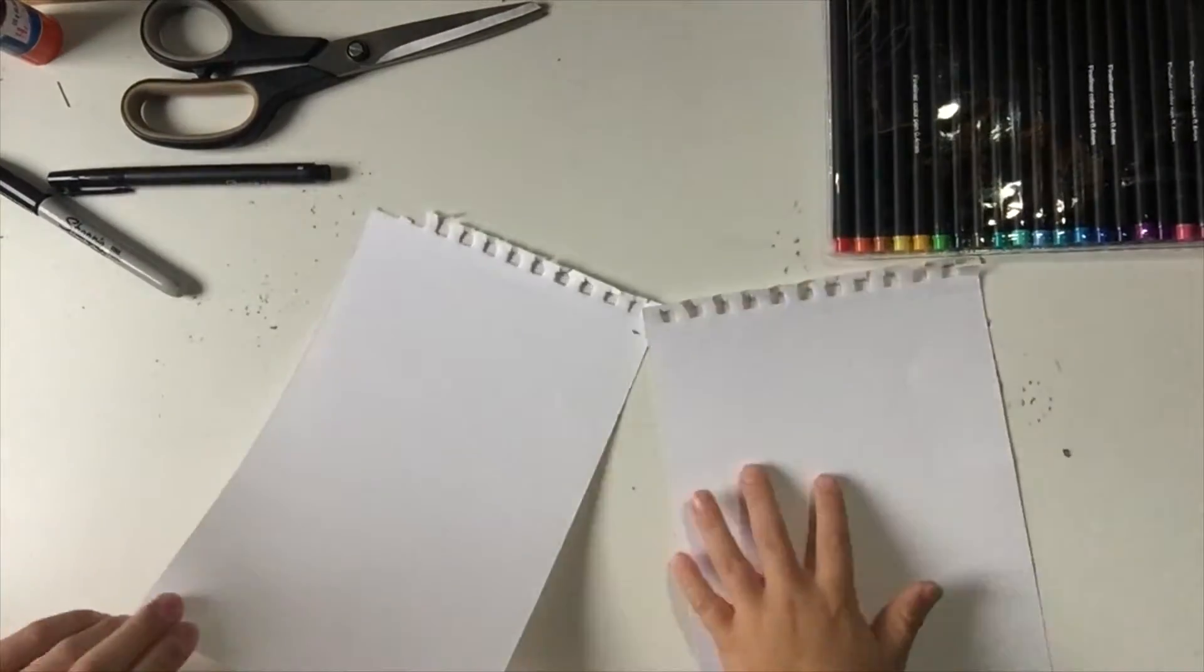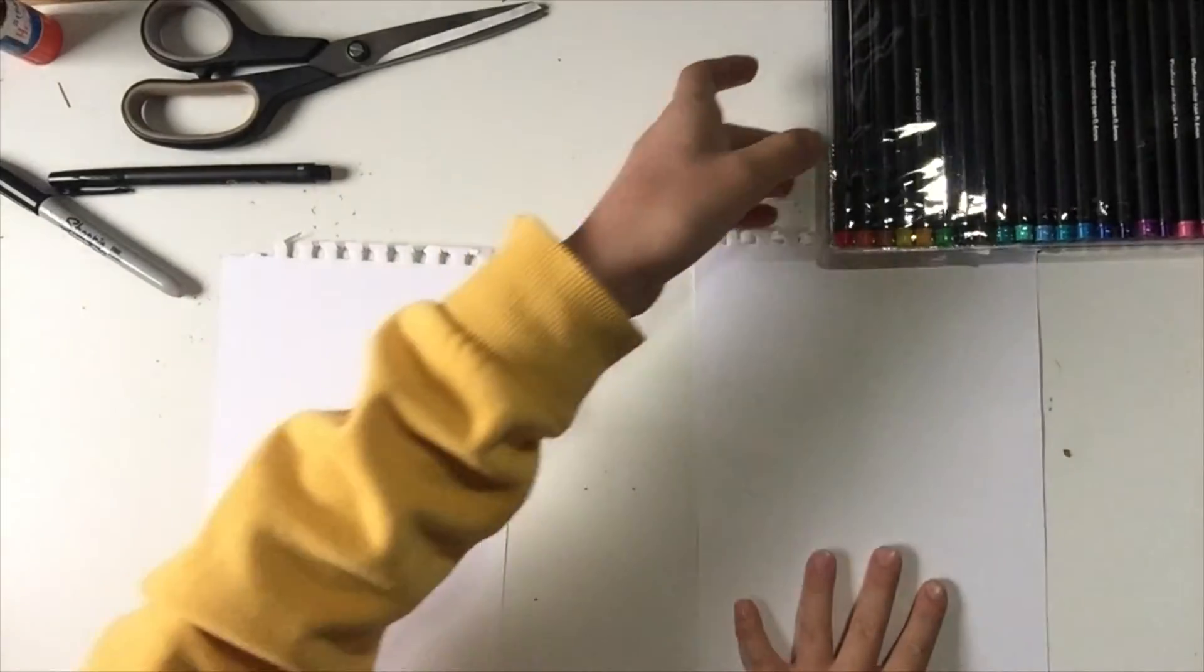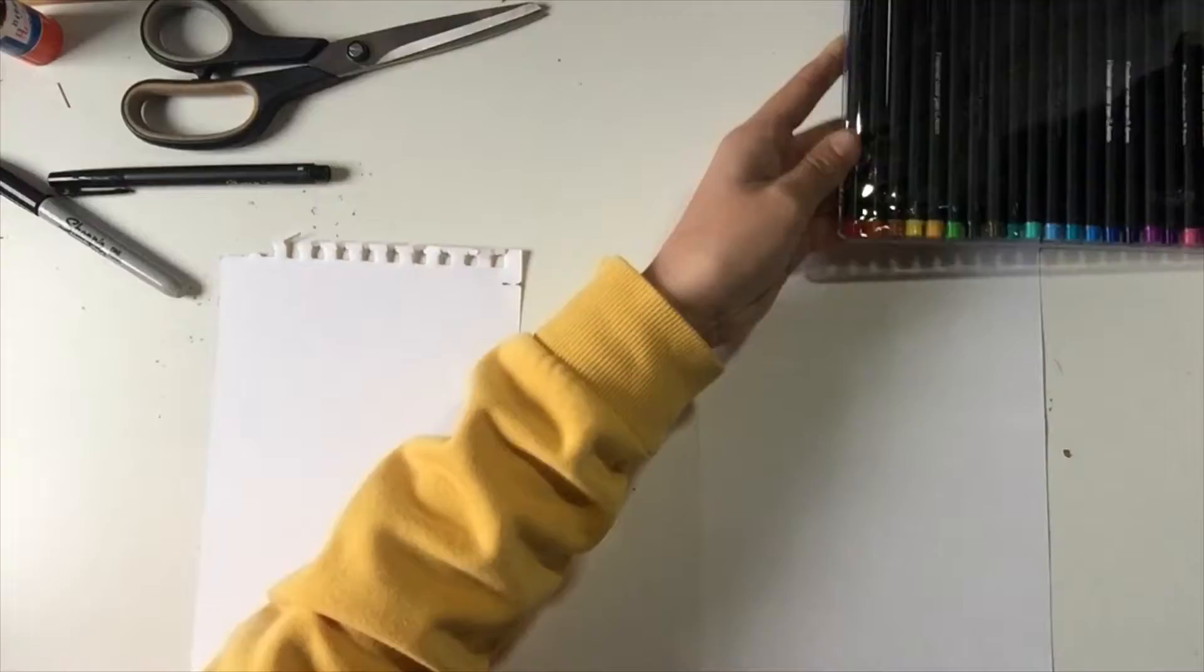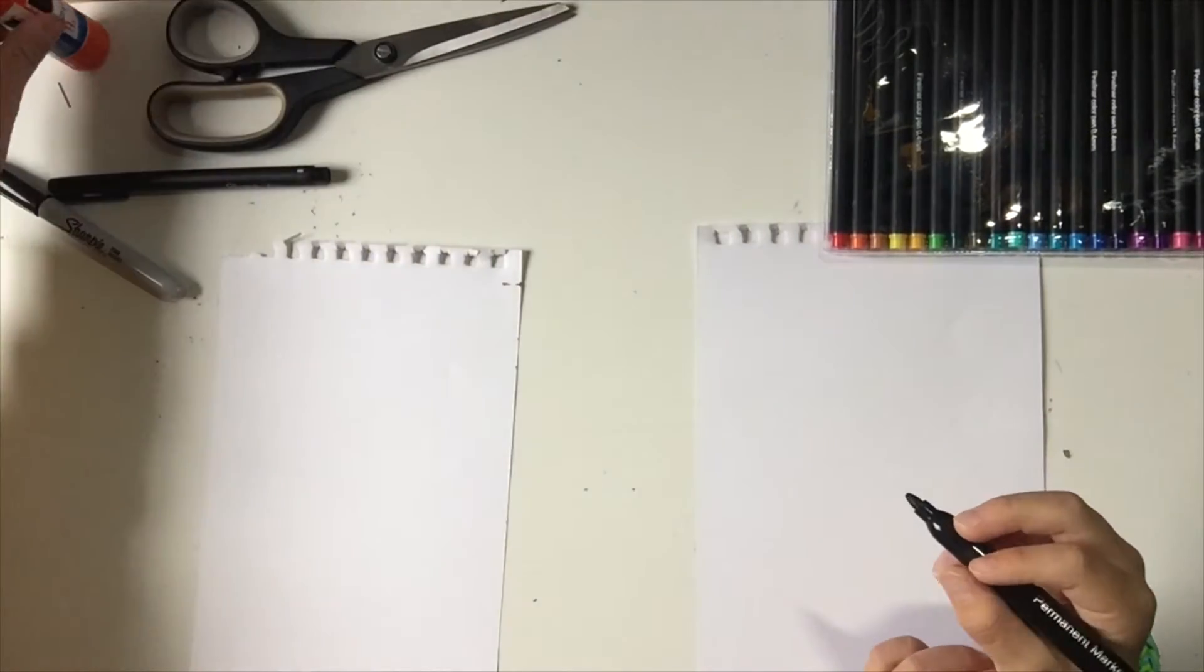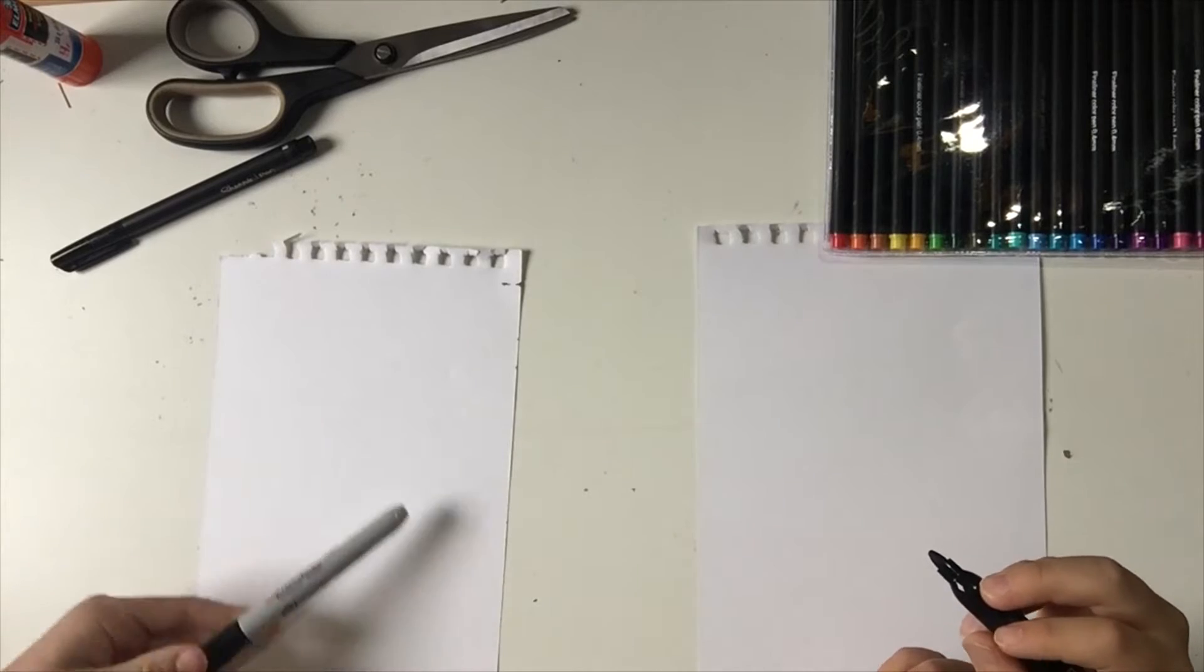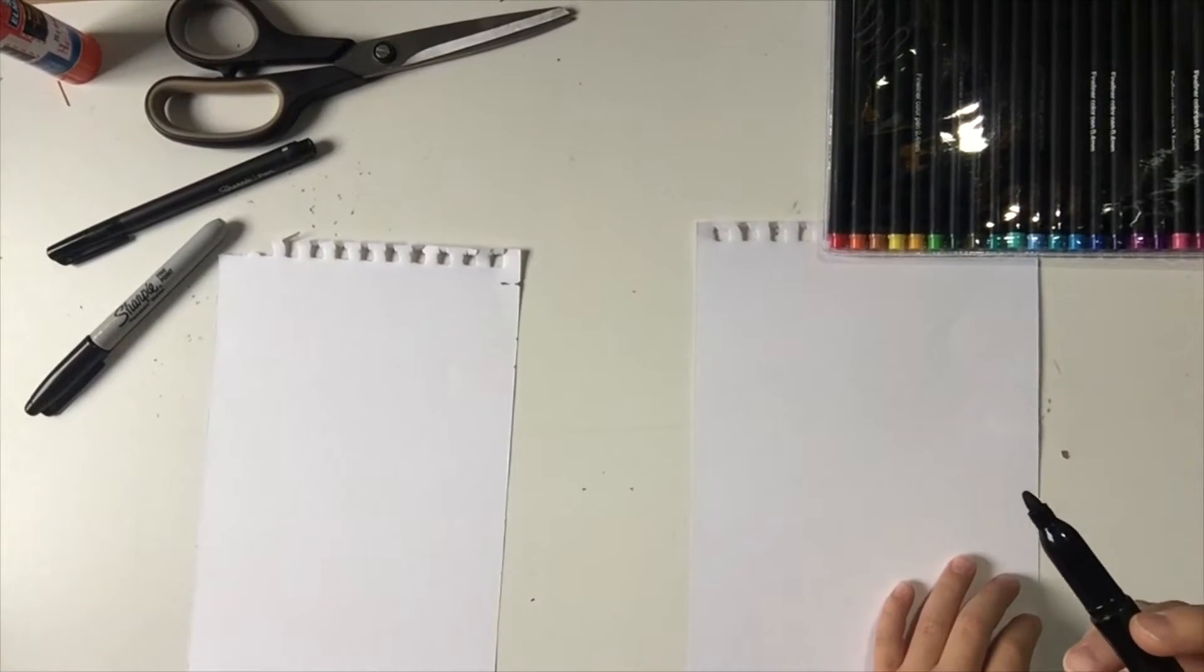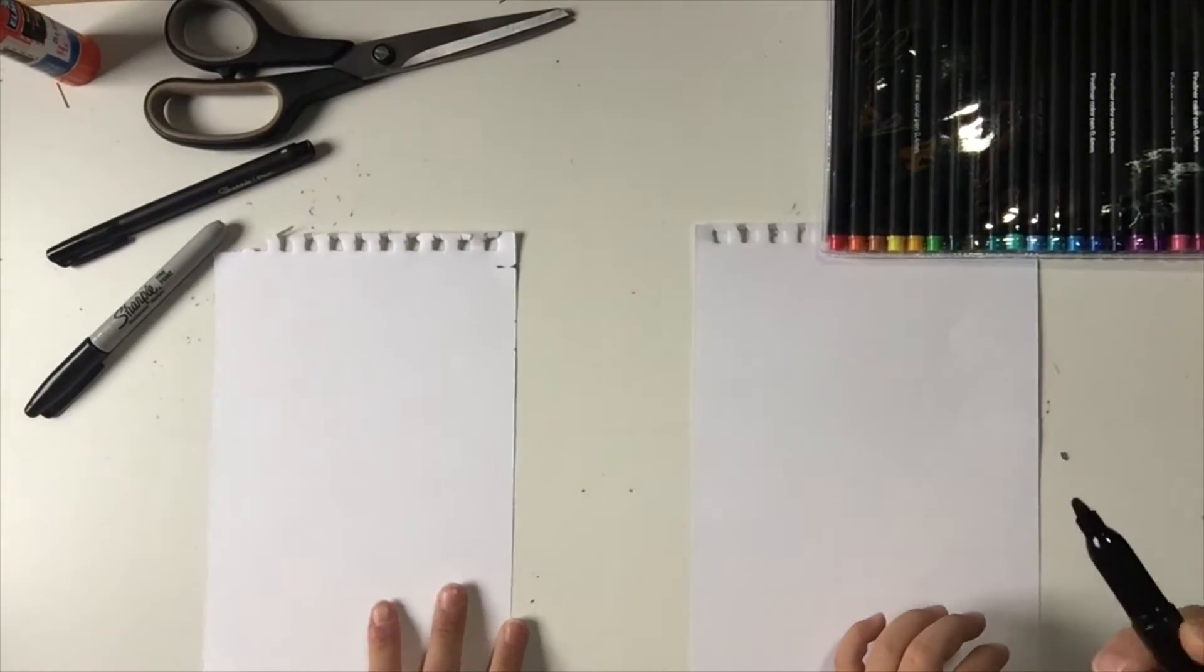For this project we are going to need some scrap pieces of paper big enough to draw something on, some markers or pens, colored pens, scissors, glue, something to draw with, and pretty paper like this. Okay, let's get started.